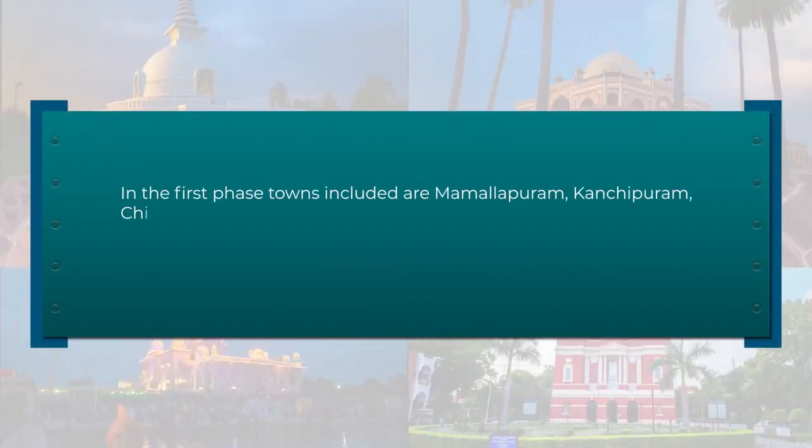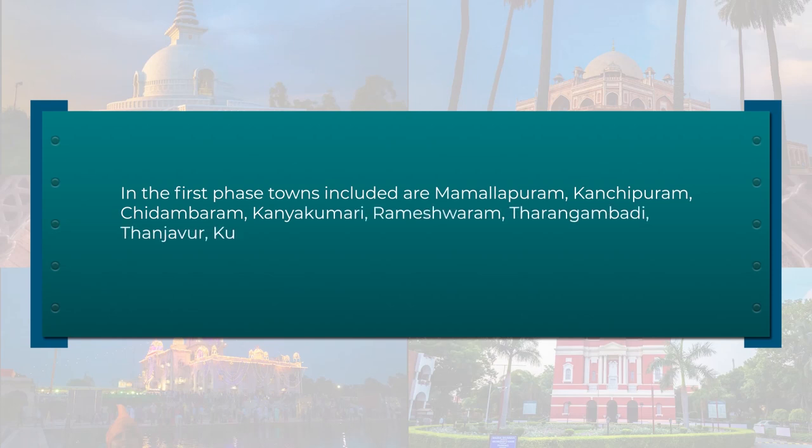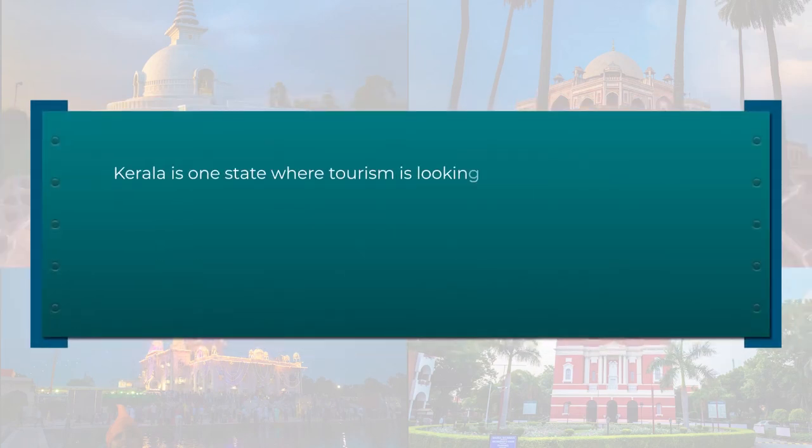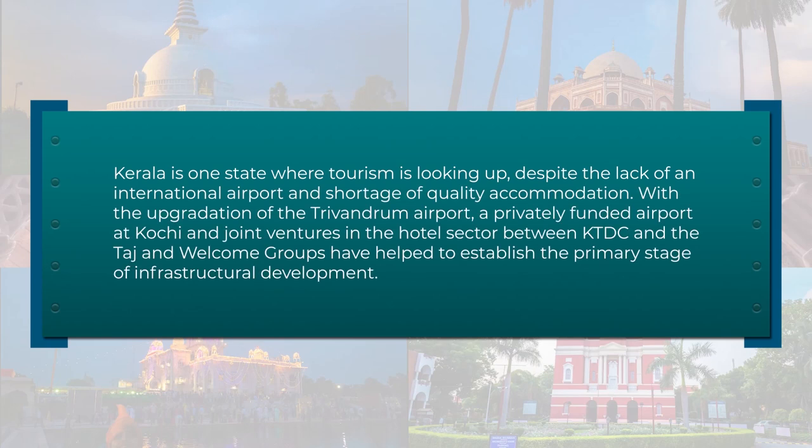The heritage town concept is bringing infrastructural improvement to the south of India. This involves conservation and protection of archaeological and architectural sites present in a large number of towns and villages. The planning also involves provision of public amenities for tourists and pilgrims. Heritage hotels are a spinoff from this concept and are very popular in states like Rajasthan. The towns included are Malapuram, Kanchipuram, Chidambaram, Kanyakumari, Rameshwaram, Tharangabadi, Tanjavur, Kumbakonam, Srirangapatna, Thiruvanai, Palam, and Sri Perambudur.